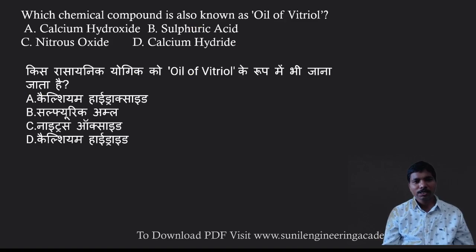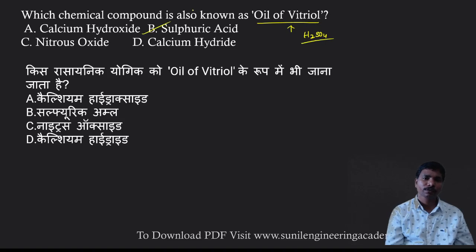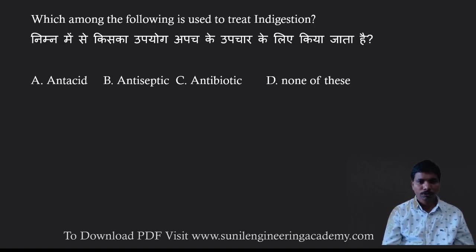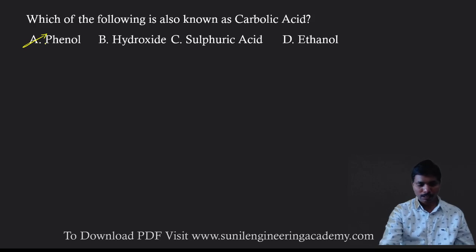Which compound is also known as oil of vitriol? As covered in the previous session, oil of vitriol is a very violent, strong acid — that is H2SO4, sulfuric acid. Answer is option B. Which compound is also known as carbolic acid? Carbolic acid belongs to the phenol group — the answer is phenol.